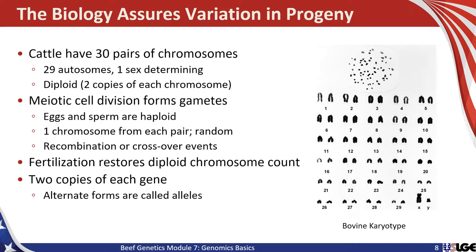That creates variation. Another source of variation comes from recombination or crossover events where chromosomes exchange material, creating a mixture of genetic material from an individual's grandparents, such that they aren't equal in terms of chromosomal contribution. Fertilization — the merging of the sperm cell and the egg cell to form an embryo — restores the diploid chromosomal count. So the sperm and egg are each haploid; combining them restores diploid chromosome count, which is two copies of each gene. Alternate forms of those genes are called alleles.